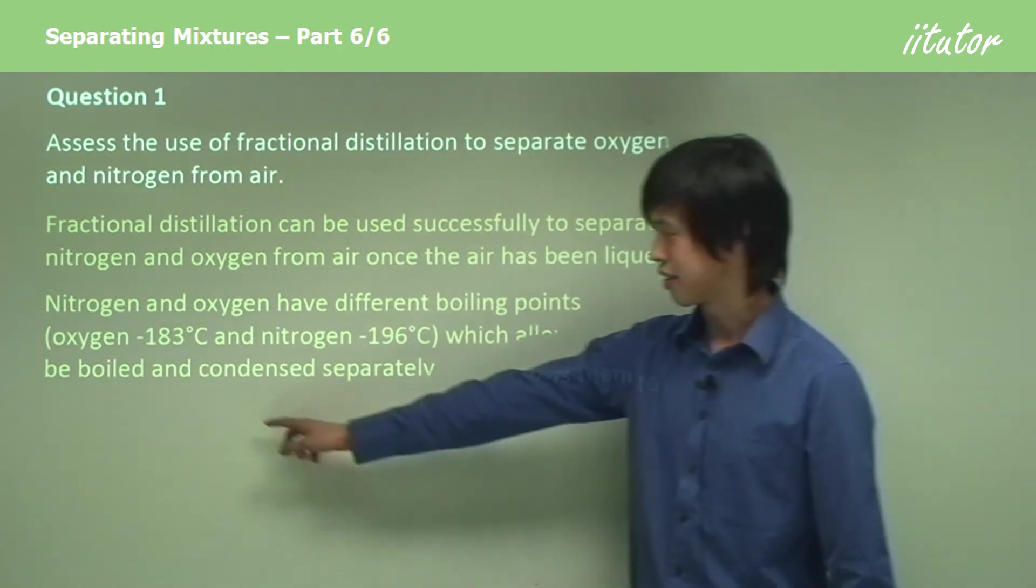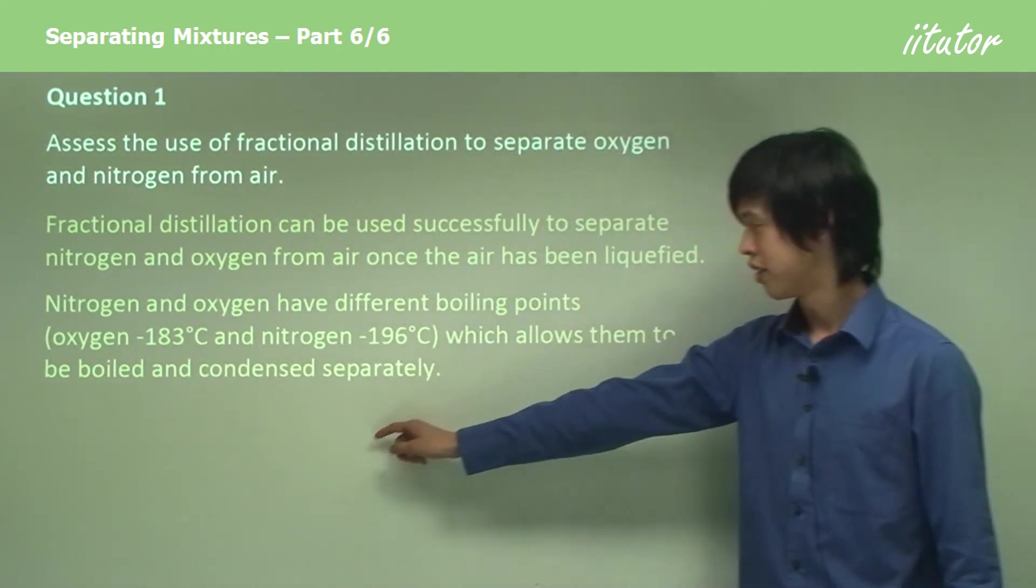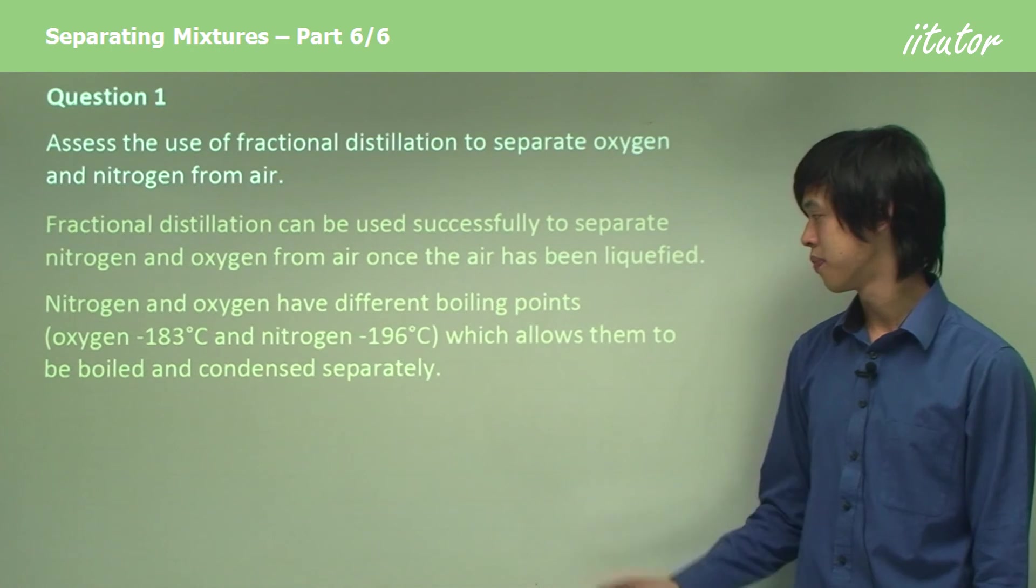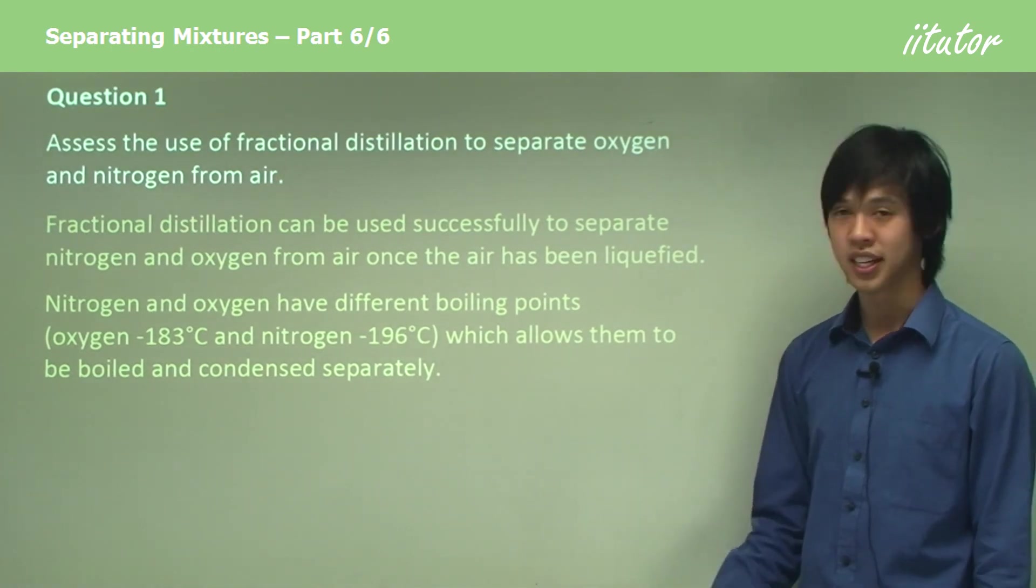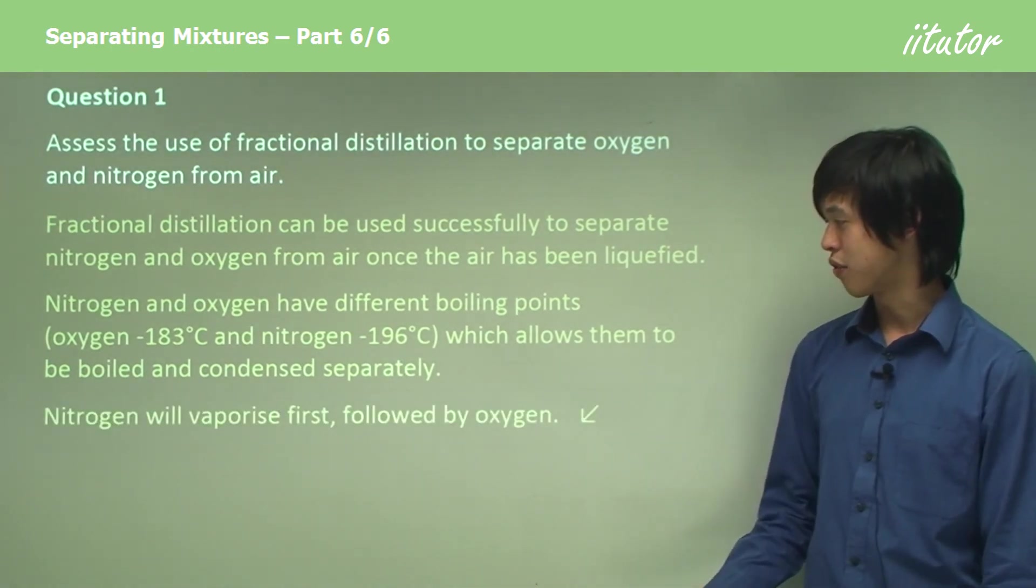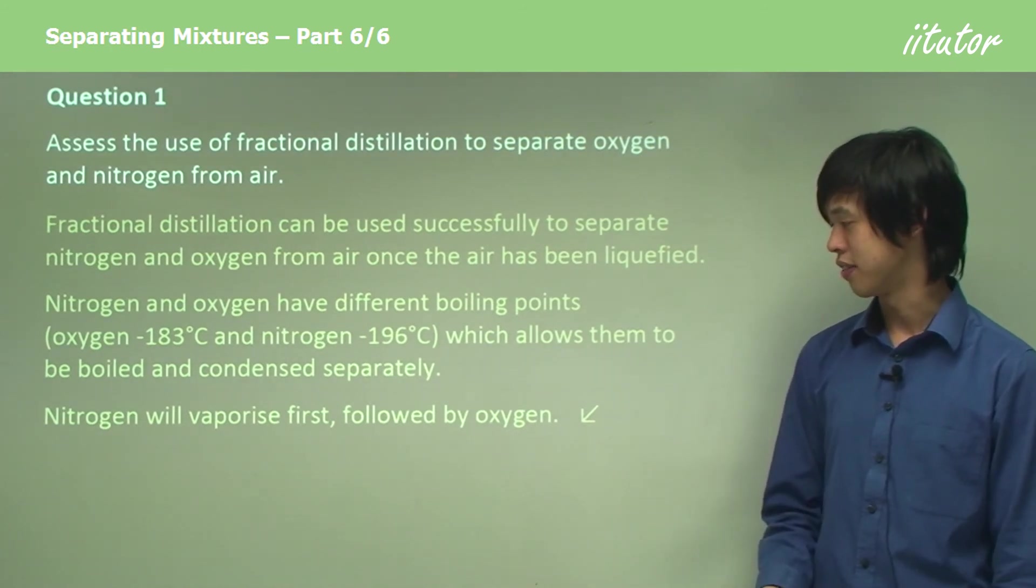Oxygen has negative 183°C, whereas nitrogen is negative 196°C, which allows them to be boiled and condensed separately. Nitrogen will vaporize first, followed by oxygen.